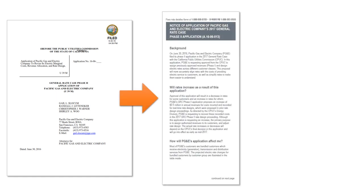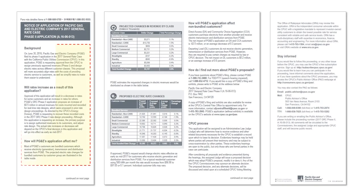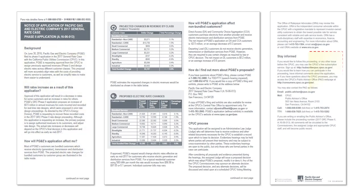If your utility is starting a general rate case with the CPUC, a notice will appear on your bill or in your bill envelope, or you might receive a separately mailed notice. The notice should explain the impact of what your utility is asking for and tell you how to contact the CPUC to comment on the case.